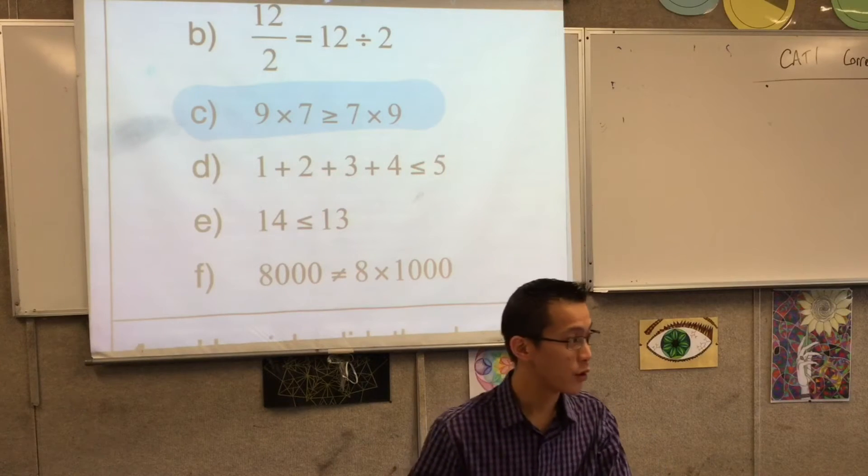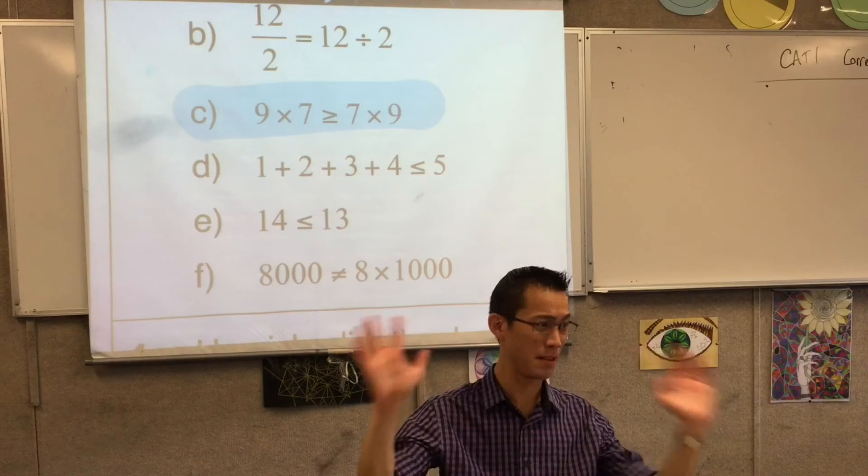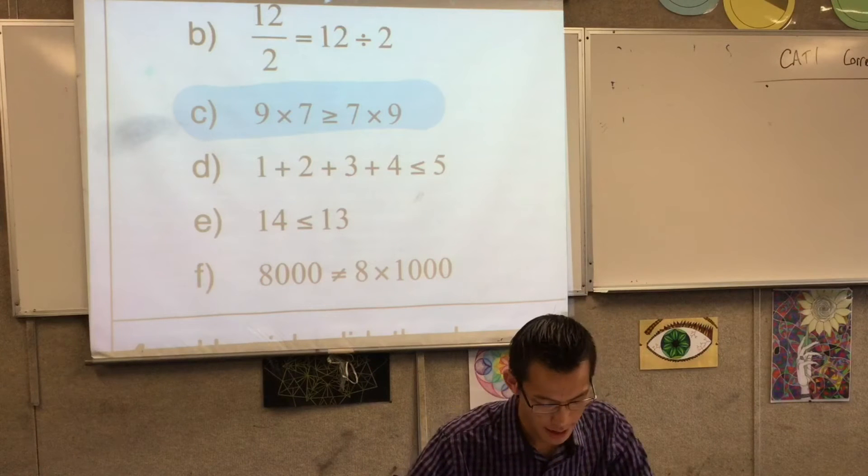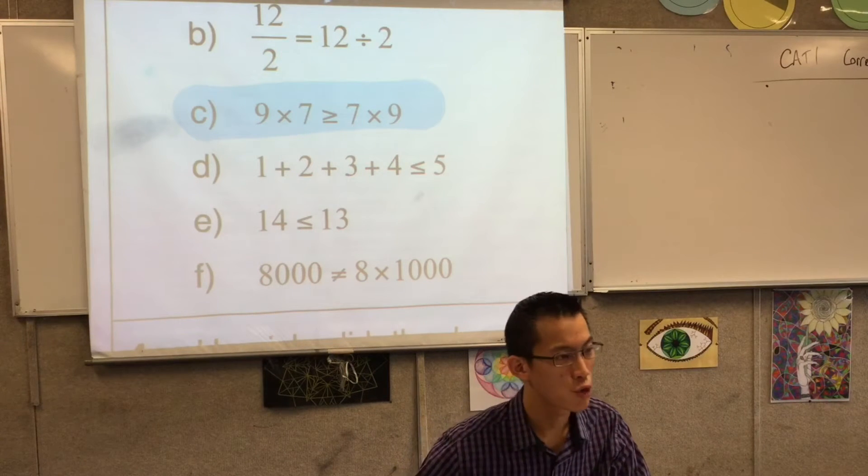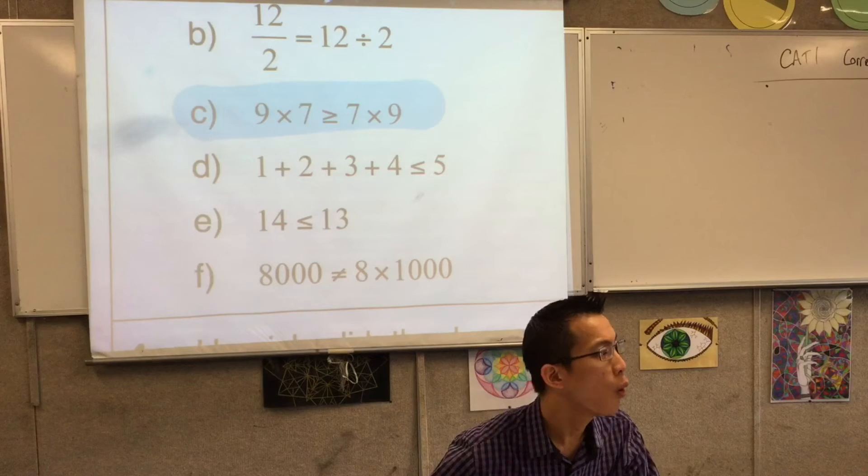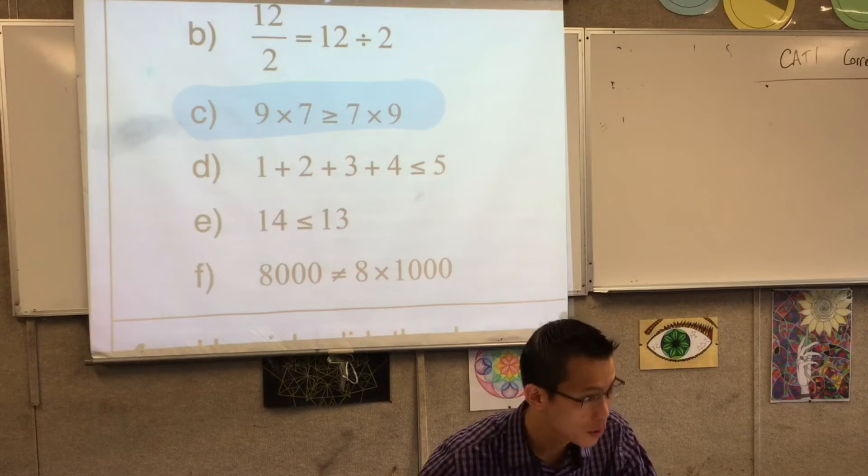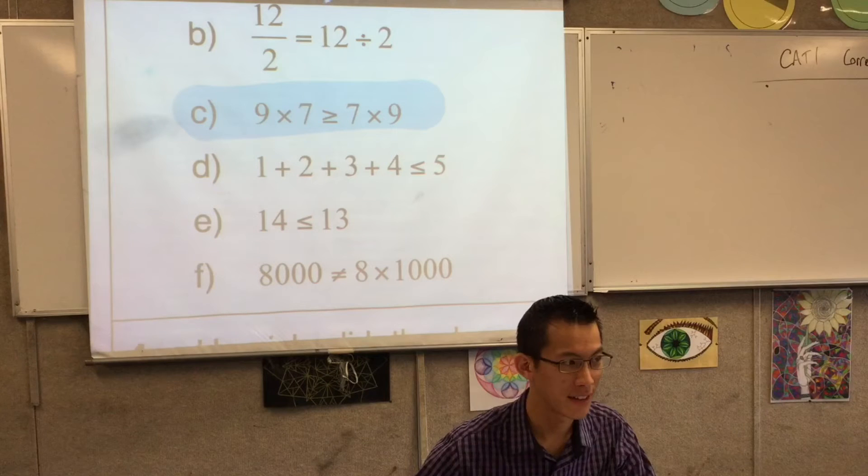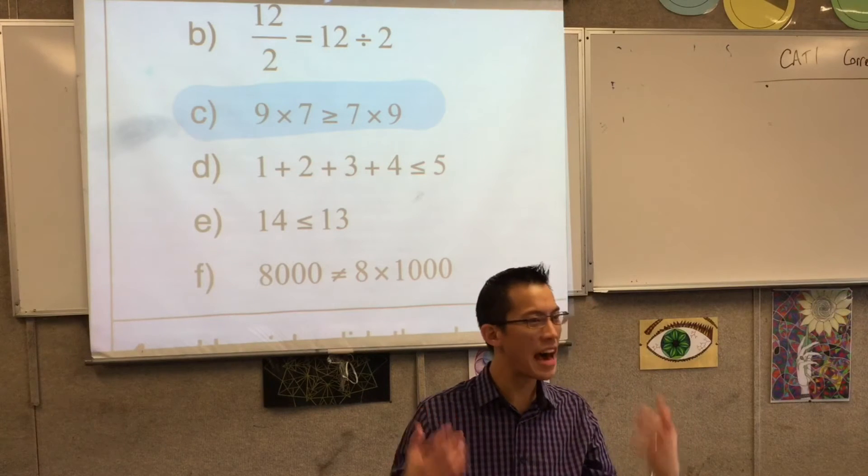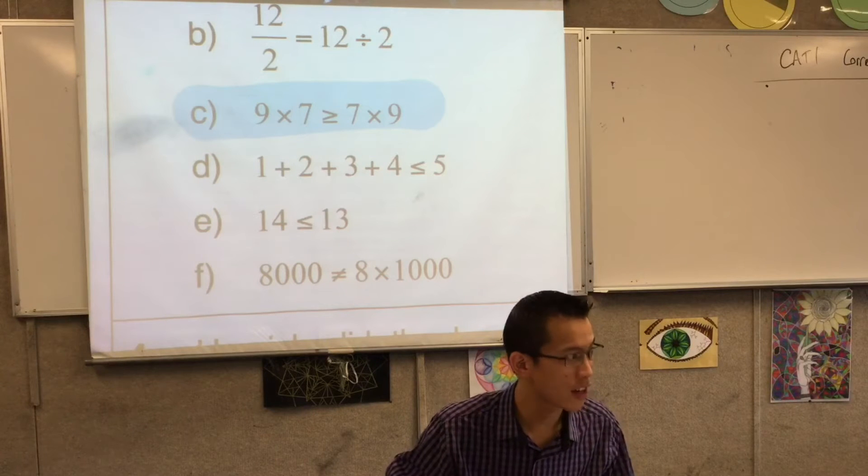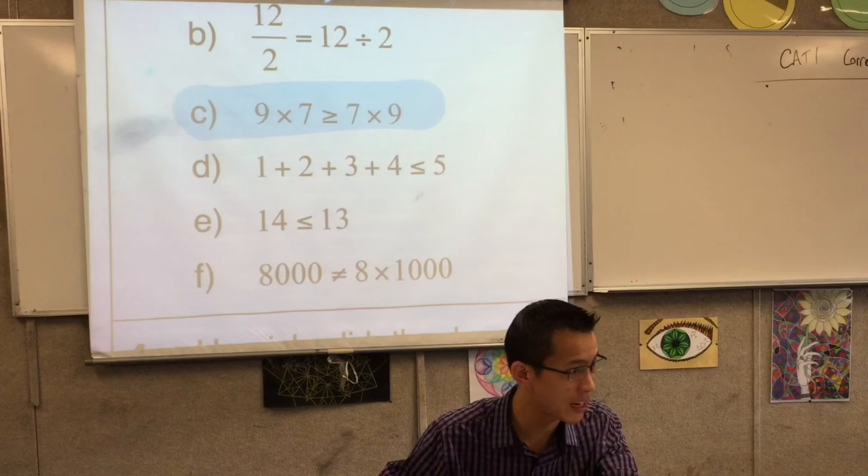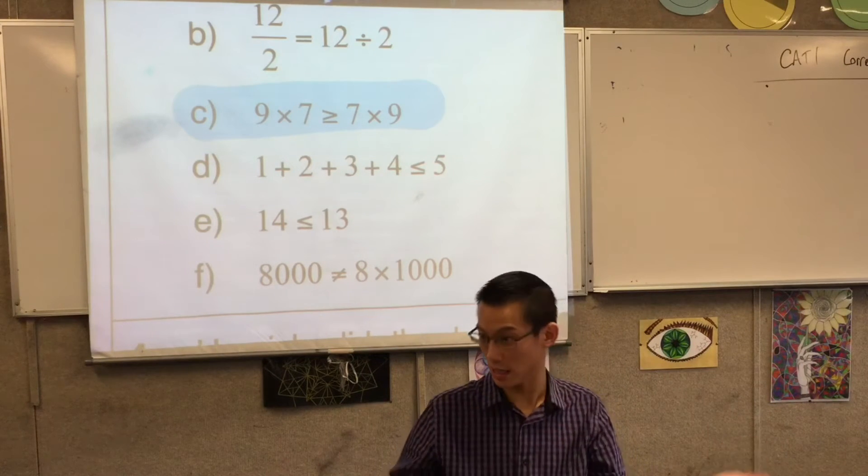Let me read that for you, just in case you cannot remember, because to be fair, it's been a while since we looked at this. That statement means 9 times 7 is greater than or equal to 7 times 9. Now, that is why a lot of you thought, oh, 9 times 7 is 63. 7 times 9, according to the commutative law, is also 63, right?